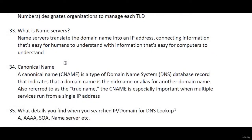What is a canonical name (CNAME)? A CNAME is a type of DNS database record that indicates a domain name is a nickname or alias for another domain name. For example, if you have example.com with three subdomains — w1.example.com, w2.example.com, w3.example.com — and you want all subdomains to redirect to example.com, that is what a CNAME does. It indicates that the domain name is an alias for another domain name.